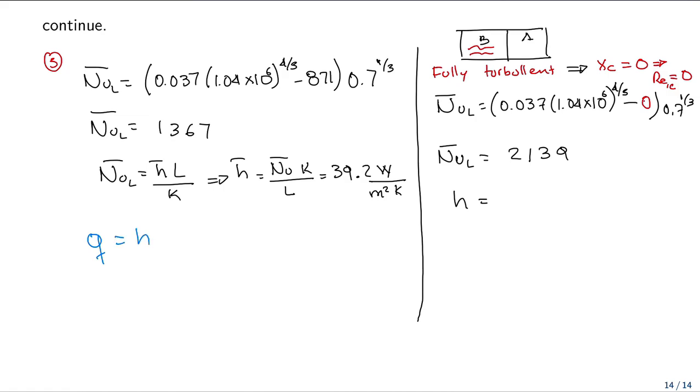If we compute the heat transfer, Q is equal to H multiplied by the area multiplied by 100 minus 20. So Q is proportional to H, and H is proportional to Nusselt. Because Nusselt is bigger in this case, Q is going to be bigger in this case. So Q in our case is going to be equal to 39.2 multiplied by the area which is 1 times 0.5 multiplied by 100 minus 20. So Q is going to be equal to 1572 Watts.